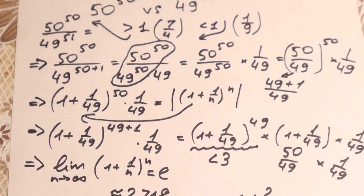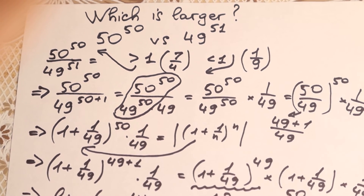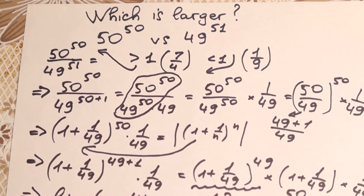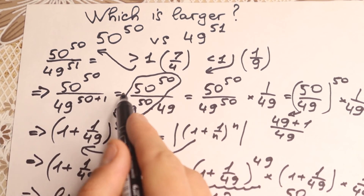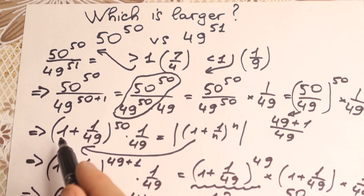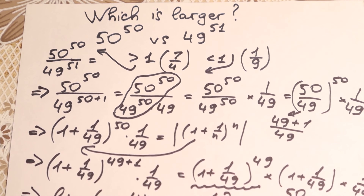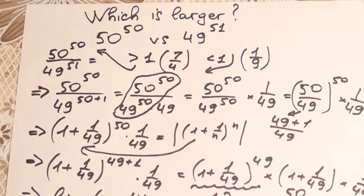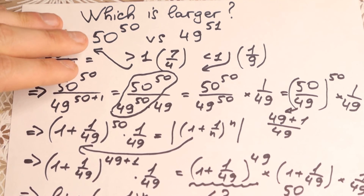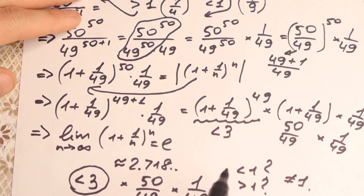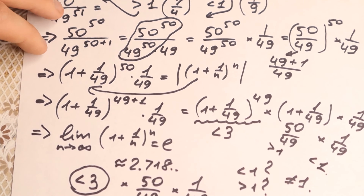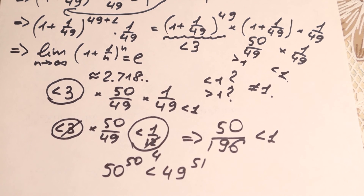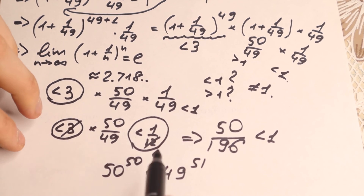Let's go through it step by step quickly. We divided the left hand side by the right hand side. Using the power rule we separated and grouped the expression, arriving at (1 plus 1 over 49) to the power of 49, times (1 plus 1 over 49), times 1 over 49. Using the limit definition of e, this expression is less than 3. Multiplying through, the product is less than 1, so the right hand side — 49 to the power of 51 — is greater.